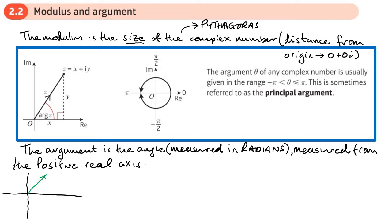The length of that complex number is the modulus. The angle is measured from the positive real axis, which is like zero radians. We don't use degrees; we use radians, and we measure around clockwise or anti-clockwise depending on whether the complex number is at the top or the bottom.